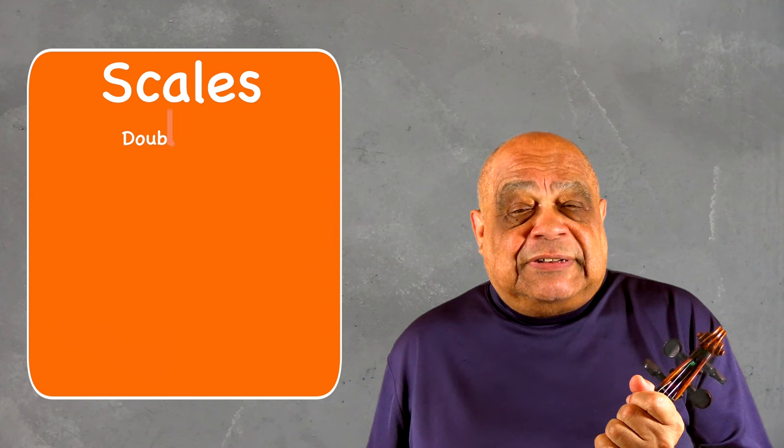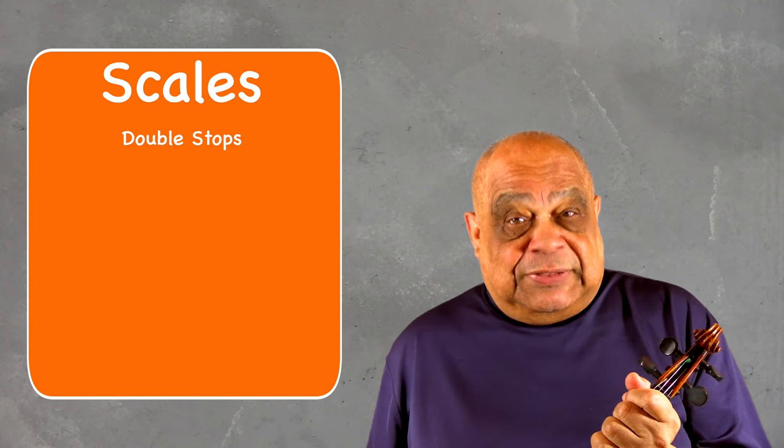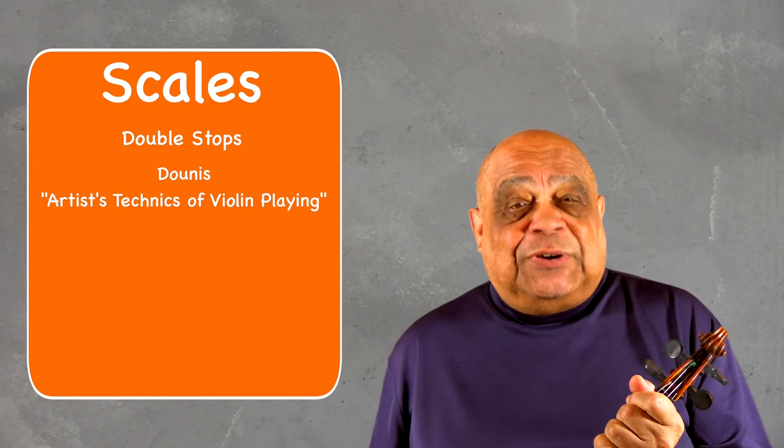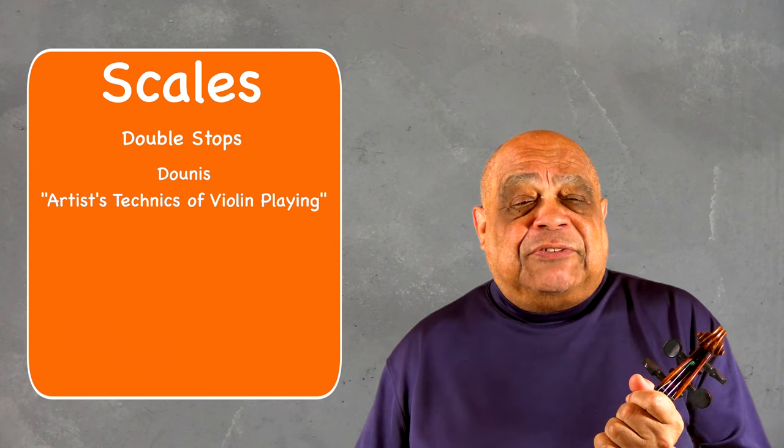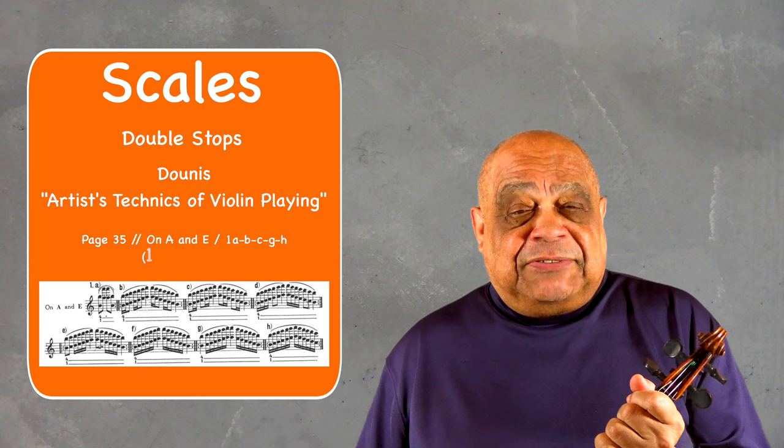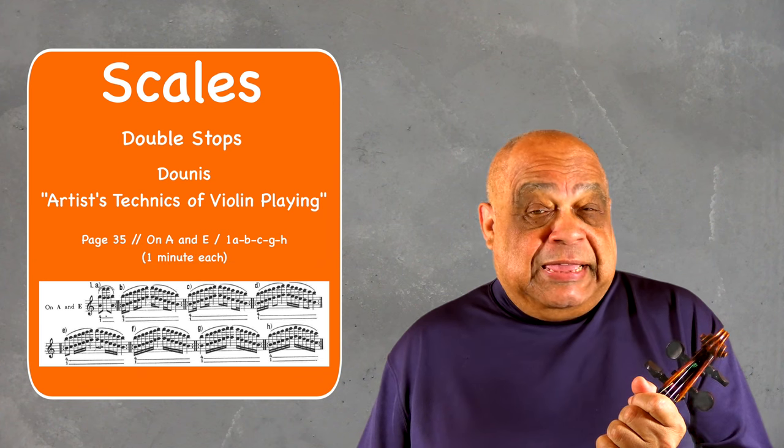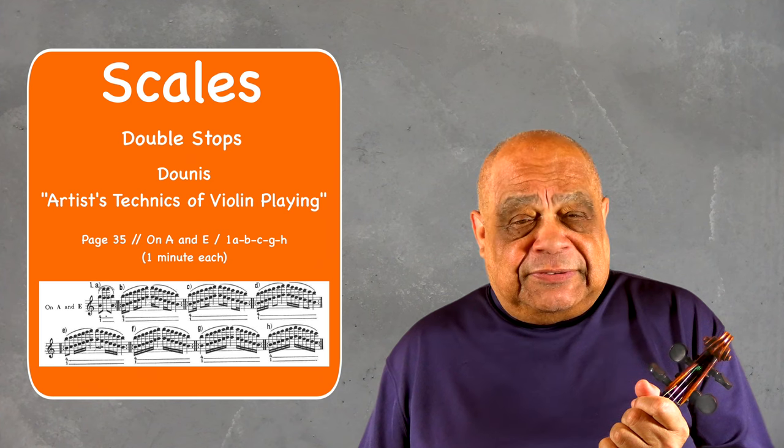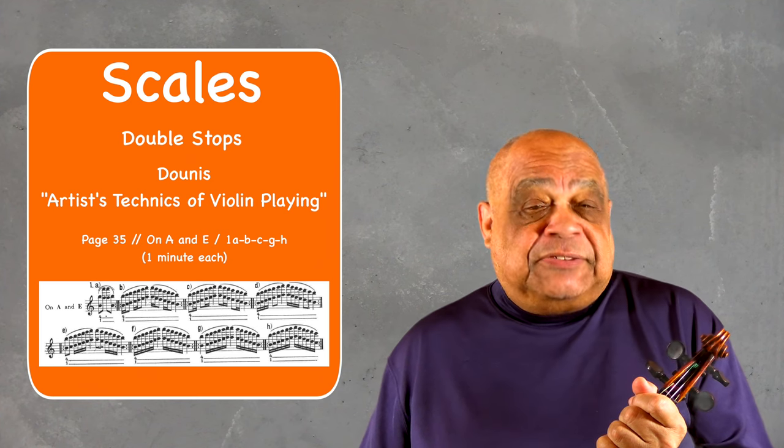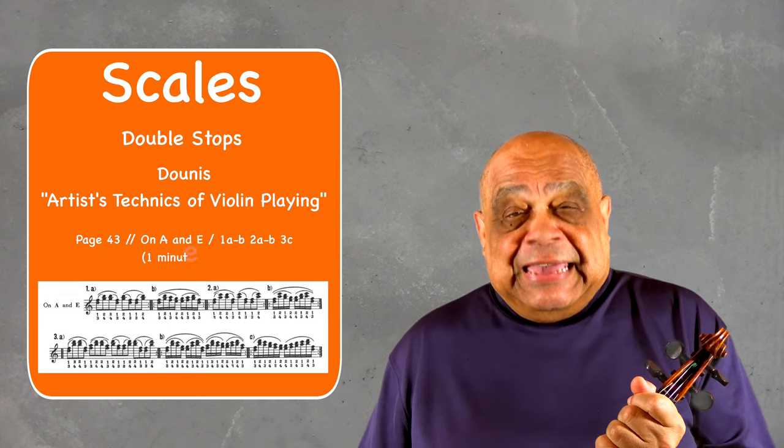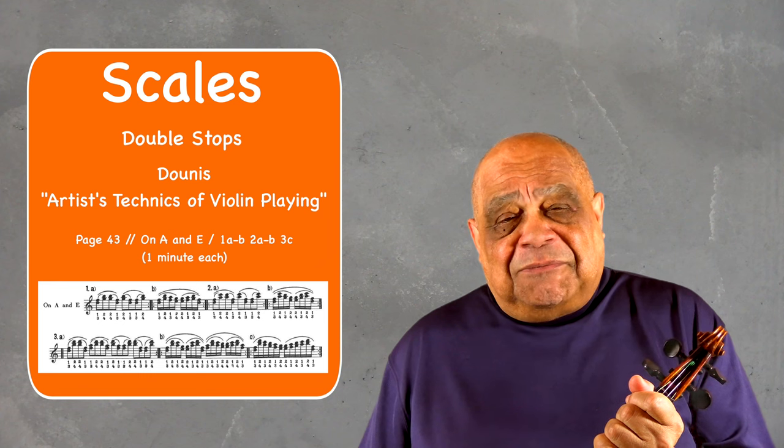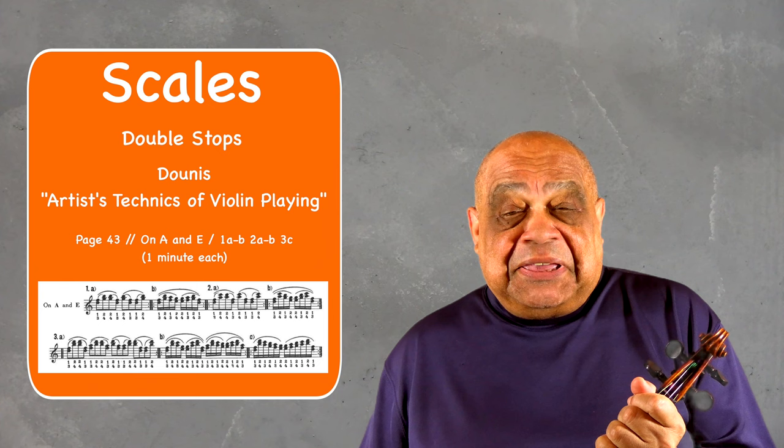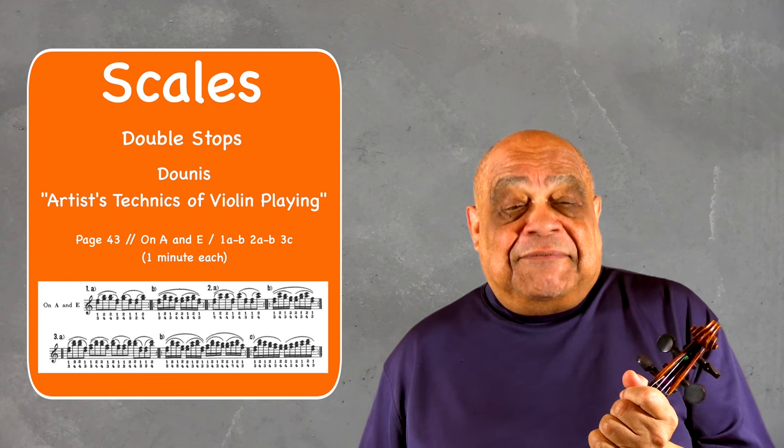Next on the list are double stops. For this I prefer to use Dounis. For example, on page 35 on the A and E string, one A, B, C, G, and H for a minute each. On page 43 on the A and E strings, one A, B, 2A, B, 3C for a minute each.